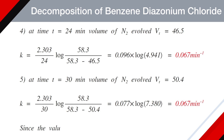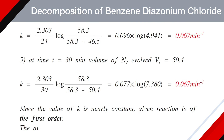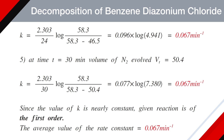Since all the above values of K are nearly constant, the given reaction is of first order. The average value of the rate constant K is 0.067 min⁻¹.